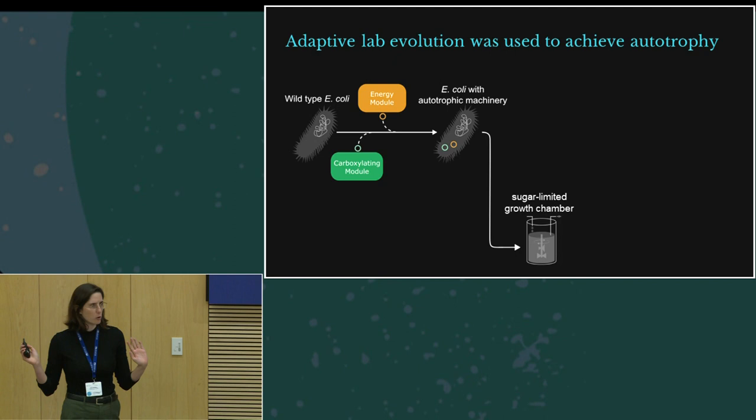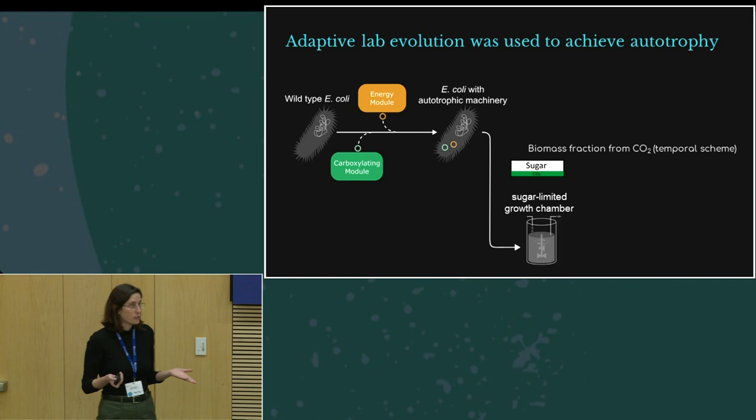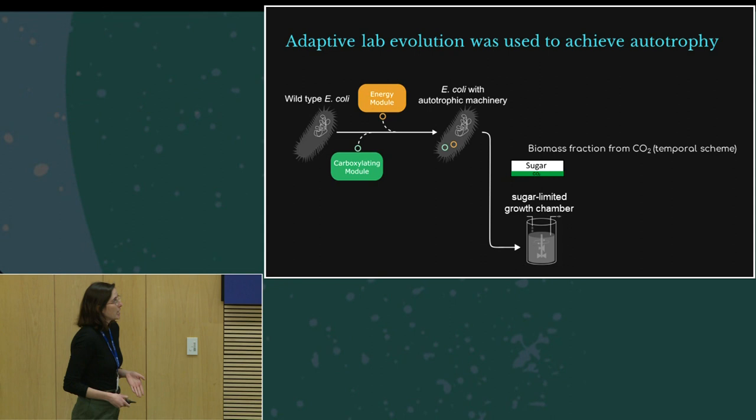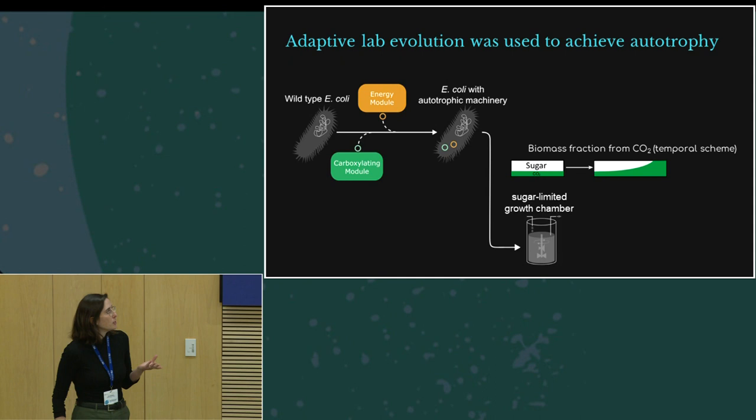And what happened in the chemostat—in the fermenter, sorry—is that at first they ate the sugar and used it to build the biomass, but then they ran out of sugar and they needed to find another carbon source. So they had to start using the new machinery, and we hoped that through evolution the fraction of carbon dioxide in their biomass would increase with time until eventually we'll have a clone that can use carbon dioxide to build the entire cell.